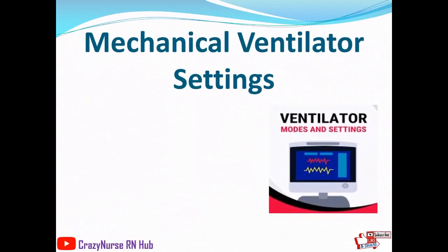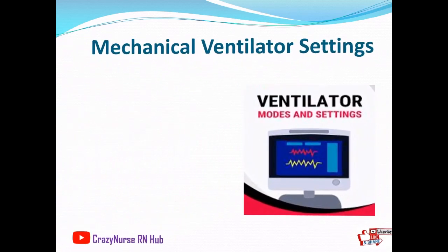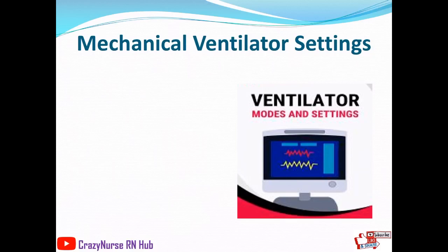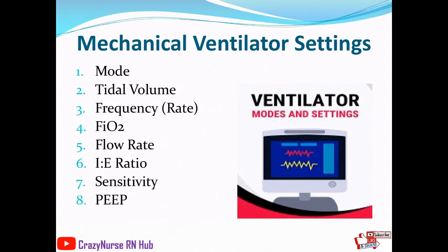Now let's proceed to mechanical ventilator settings — controls on a ventilator that can be set or adjusted to determine the amount of support delivered to the patient in the form of ventilation and oxygenation. The different settings include: mode, tidal volume, frequency or rate, FiO2 (fraction of inspired oxygen), flow rate, I-to-E ratio, sensitivity, PEEP, and alarms.